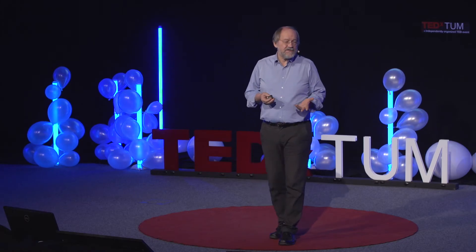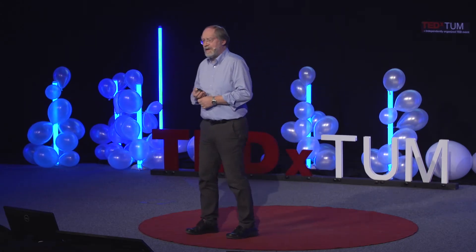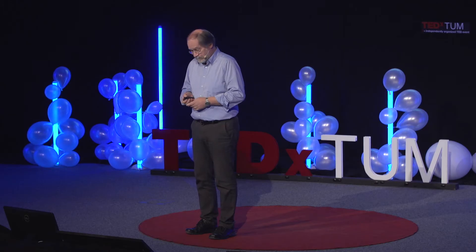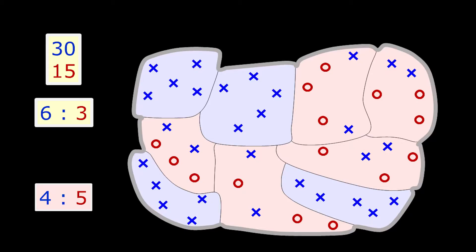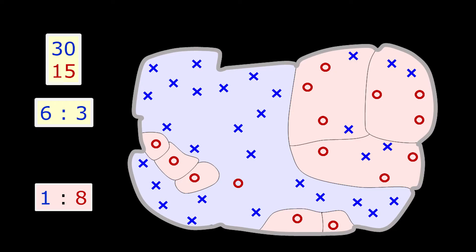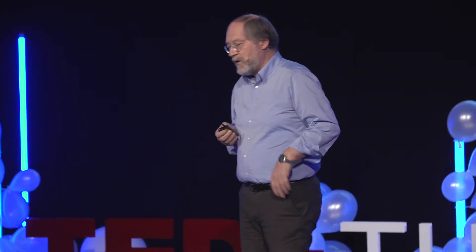And of course, gerrymandering is really a big issue in the US, but typically it is not really motivated by the wish to better represent society. Districting is not easy. If you do it like that, you see red is now winning five to four, while still the blue voters are in a two-thirds majority. And then one member of your committee might even suggest a different districting — red is winning eight to one.